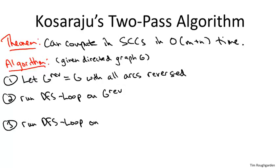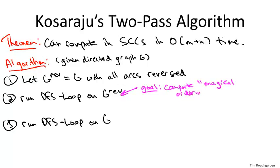The third step is just depth-first search again, but this time on the original graph. At this point you should be thinking I'm totally crazy — we're trying to compute these strongly connected components, but all I'm doing is searching the graph once forward and once backward. The catch, which is very minor, is that we need a little bit of bookkeeping. The second DFS will, in its search process, discover the strongly connected components one at a time in a very natural way. For this to work magically, it's really important that the second DFS processes nodes in a particular order — and computing that order is exactly the job of the first pass.